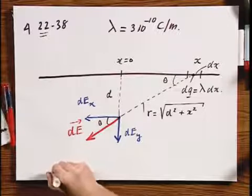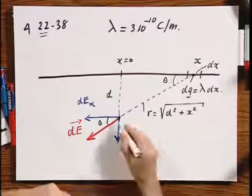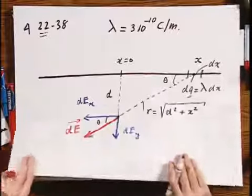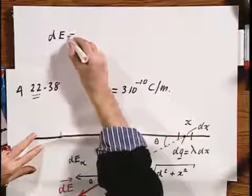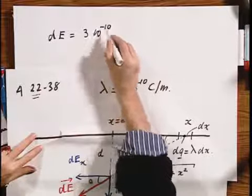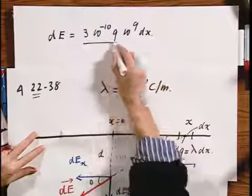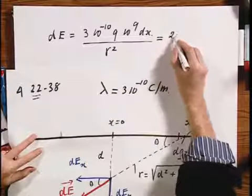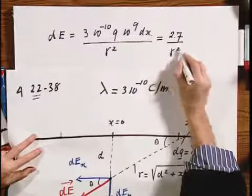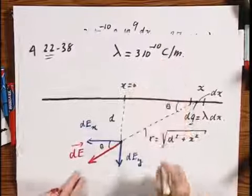All right then. Now, first the nasty way. I first want you to appreciate that calculating dE is very easy. The magnitude of dE, now only the magnitude, equals 3 times 10 to the minus 10, times 9 times 10 to the 9, times dx, divided by that distance r squared. And when you put in the numbers, you'll find 2.7 divided by r squared, times dx. That's the magnitude.